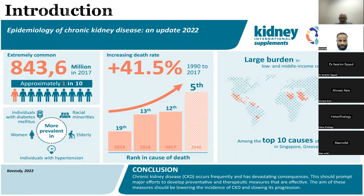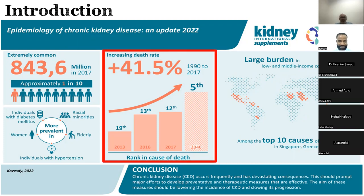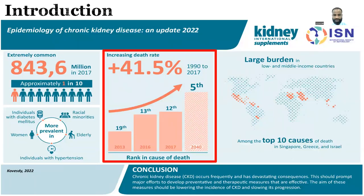Only very few diseases, and sadly chronic kidney disease is one of them, have shown an upward rise over the years. In 2013, CKD was ranked as the 19th cause of death; from 2013 to 2017 that moved to 12th. It is projected that by 2040, CKD will be the fifth leading cause of death in the world. From 1990 to 2017, the rate increased by 41.5% — a cause of serious concern.